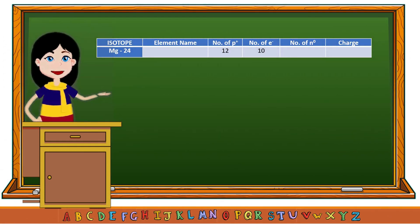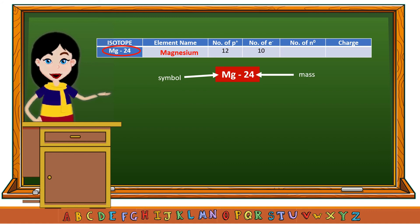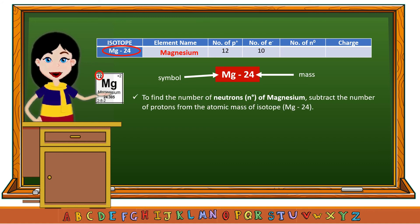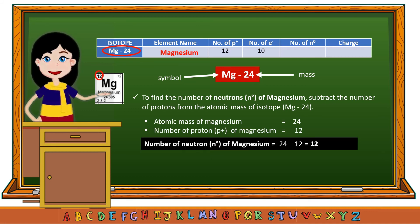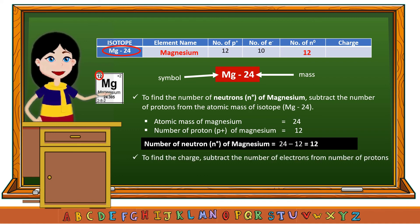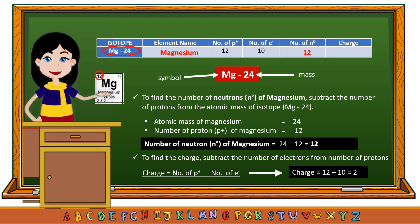For the Mg-24 isotope, Mg is the symbol for magnesium and 24 is its atomic mass number. To find the number of neutrons, subtract the number of protons from the atomic mass: 24 minus 12 equals 12. Therefore, the number of neutrons of magnesium is 12. To find the charge of magnesium, subtract the number of electrons from the number of protons: 12 minus 10 equals 2. The charge of magnesium is positive 2.